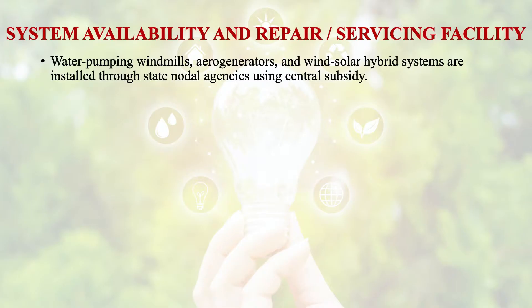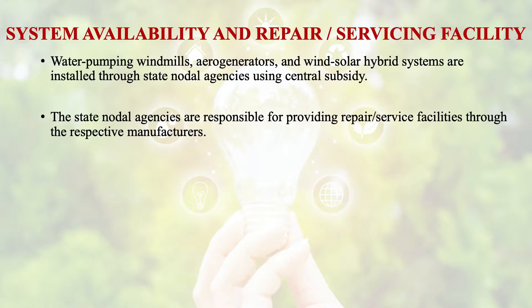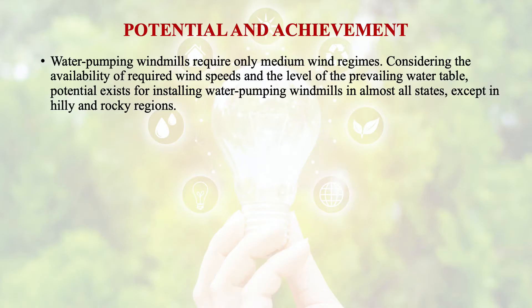The system availability and repair or servicing facility for these water pumping windmills, aerogenerators, and wind-solar hybrid systems are installed through state nodal agencies using central subsidy, and the state nodal agencies are responsible for providing repair or service facilities through prospective manufacturers. Regarding potential in India, water pumping windmills require only medium wind regimes, and potential exists for installing wind and wind-solar hybrid systems in almost all states except hilly and rocky regions.